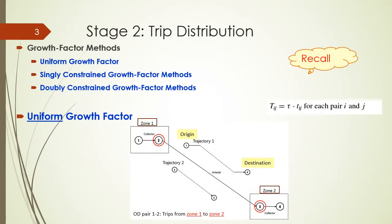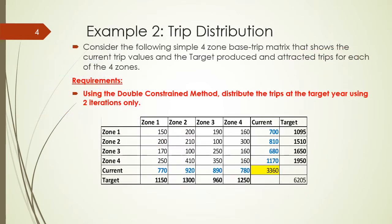The second example here talks about trip distribution, which was also discussed in tutorial number five. The uniform growth factor method assumes that the origin-destination matrix increases with the same growth factor. In this example we are given four zones for origins and four zones as destinations, along with the current trips and the target trips for both destination and origin. We need to distribute these trips using the double-constrained method using only two iterations.